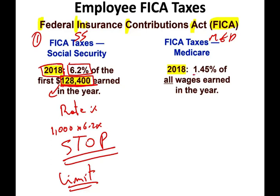For Medicare, the rate is 1.45% — lower than Social Security, but there is no earnings limit. Whether you make $5, $5,000, $5 million, or $5 billion, you keep paying 1.45% on all your wages. The employer must withhold these FICA taxes and remit them to the Internal Revenue Service.